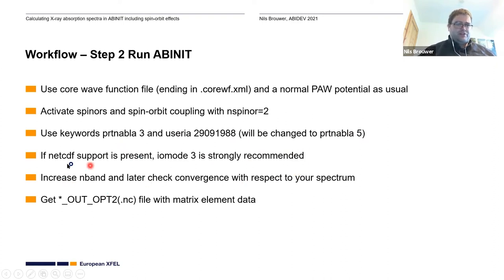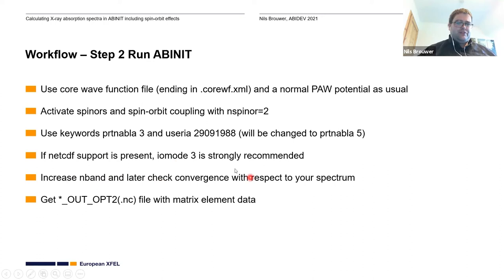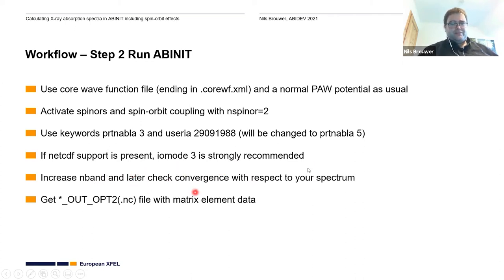One of the most important convergence parameters, besides all the others you usually check, is nband, because you want to have the excited states calculated. That is a very important convergence parameter that must be much larger than you would use for an ordinary ground state calculation. You have to check whether your spectrum is actually converged with the number of bands you use, at least up to the energy range that you are interested in.